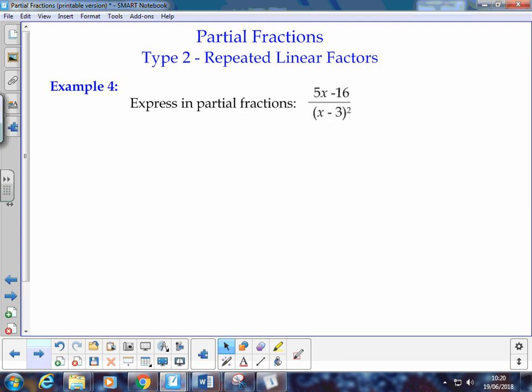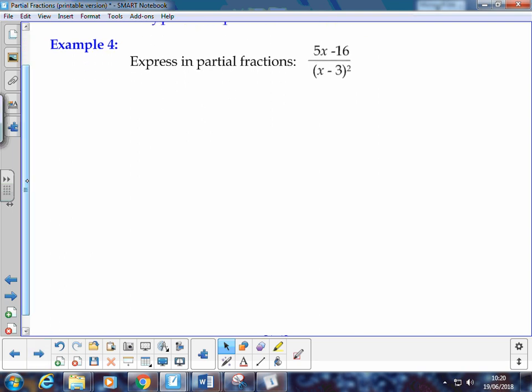Okay, so let's have a look at example 4. We're expressing in partial fractions 5x minus 16 over (x - 3) all squared. So we'll write out our rational function. Notice that as we're writing it out, it is a proper rational function. We've got an order of 1 on the numerator, we've got an order of 2 on the denominator, so it is a proper rational function. We can execute this partial fractions quite happily.